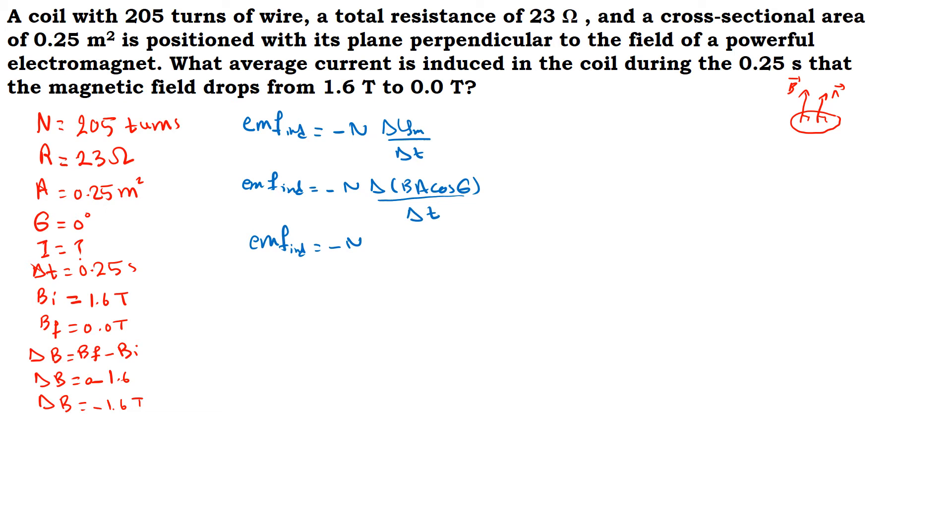So EMF induced equals minus N. We take the factors that are not changing out and we keep the variable after the delta, so minus N A cosine theta ΔB by Δt.